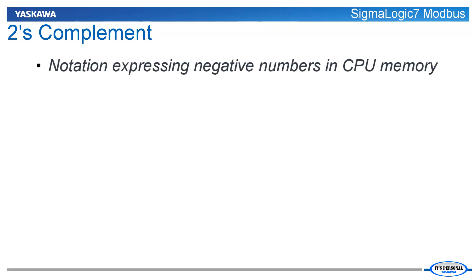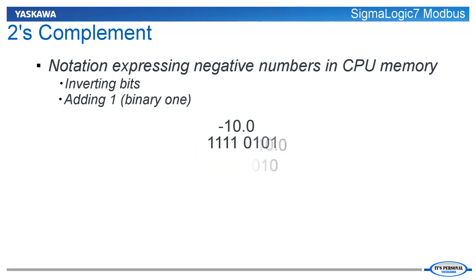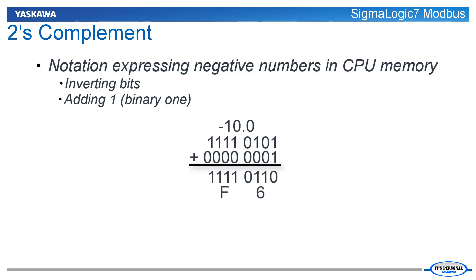Two's complement is a notation for expressing negative numbers in CPU memory. The simple method involves inverting the bits of the absolute value of a number and then adding one. For example, to arrive at the binary value for the decimal number negative 10, start with the binary expression of the absolute value 10, then take the complement of each bit — meaning invert it — and add one to achieve the final expression.